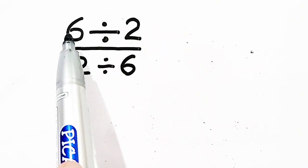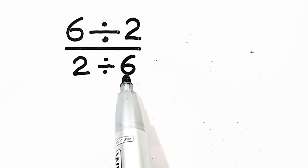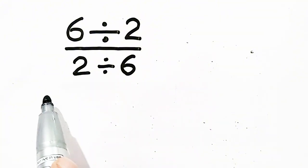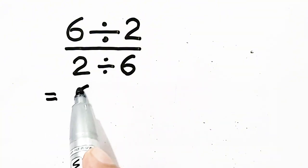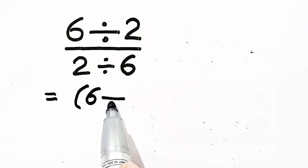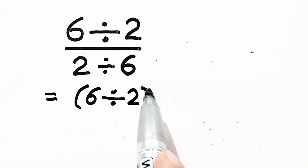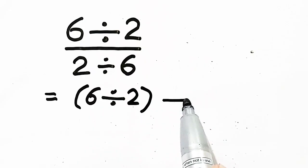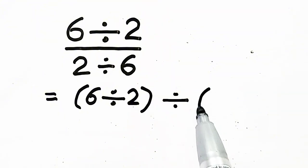We will solve the numerator and denominator separately, so we have to make two parentheses. Six divided by two is in the first parentheses, and the fraction is a ratio so it is division. The second parentheses is two divided by six.